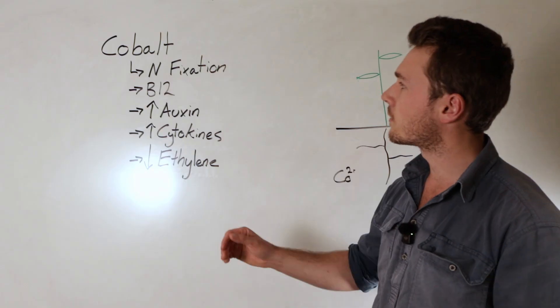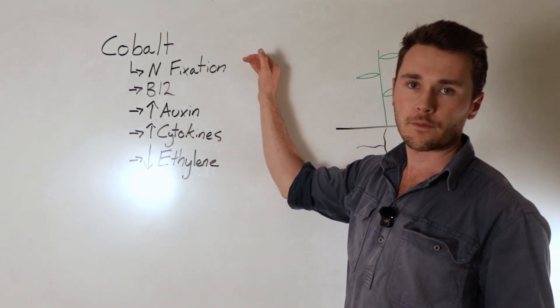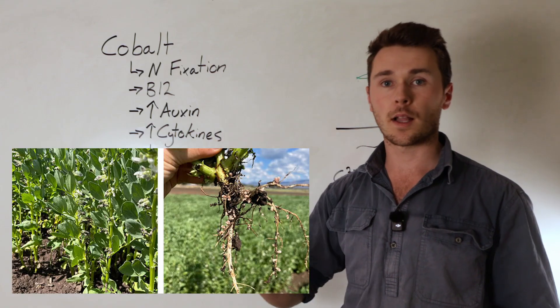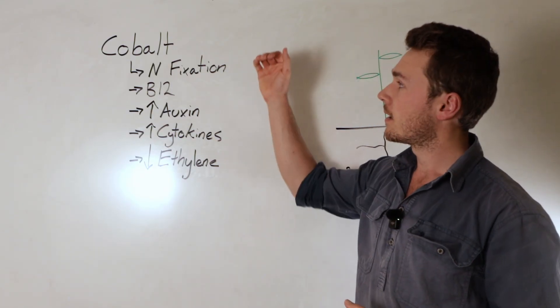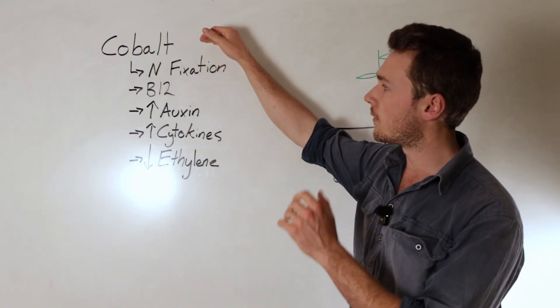So the first important function of cobalt is in anything that fixes nitrogen. This is both legumes as well as nitrogen fixing bacteria, and there's two main functions or enzymes that cobalt is used in in terms of nitrogen fixation.